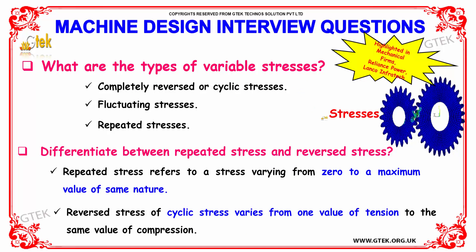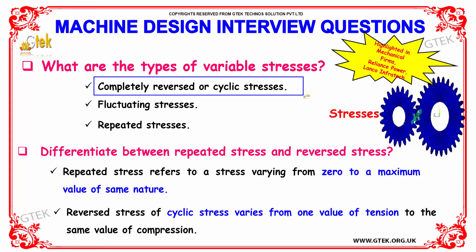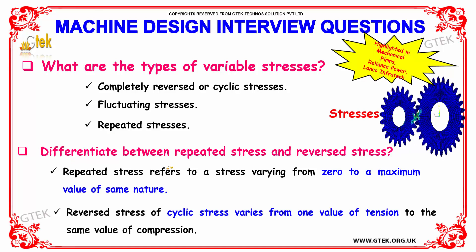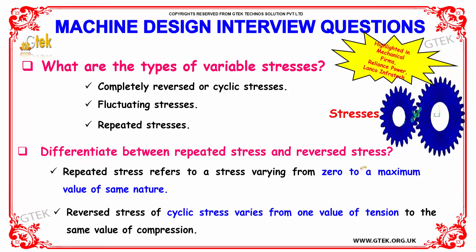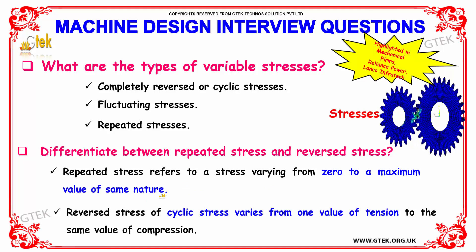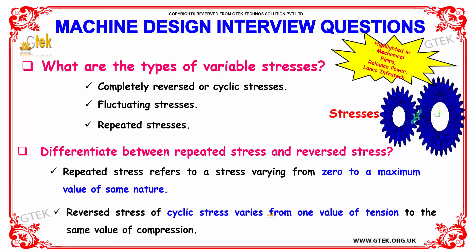What are the types of variable stresses? The types of variable stresses are completely reversed or cyclic stresses, fluctuating stresses, and repeated stresses. Repeated stress refers to a stress varying from zero to a maximum value of the same nature. Reversed stress, or cyclic stress, varies from one value of tension to the same value of compression.